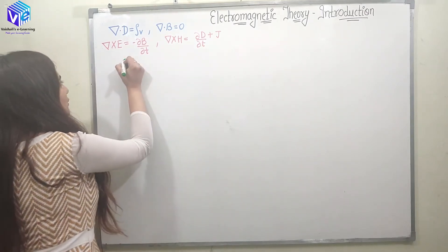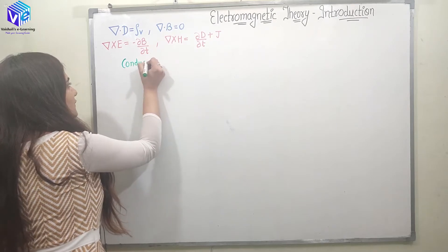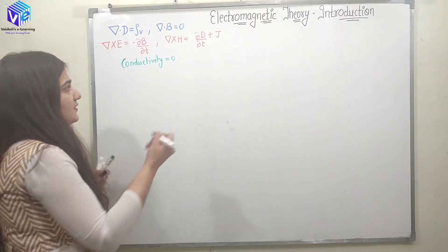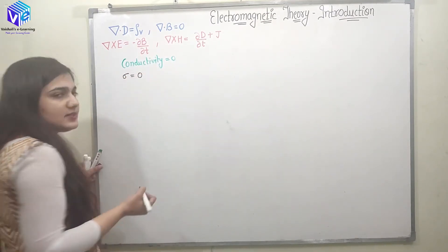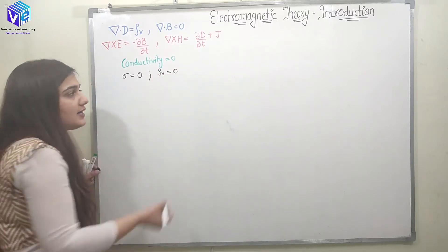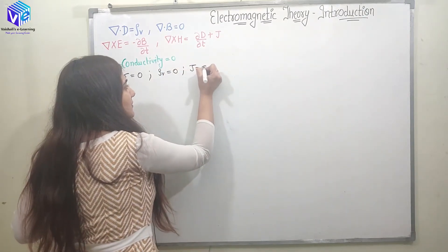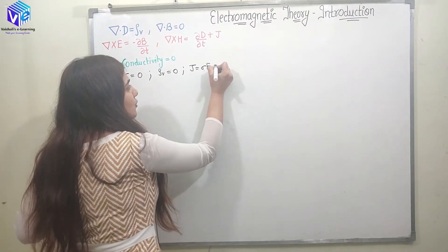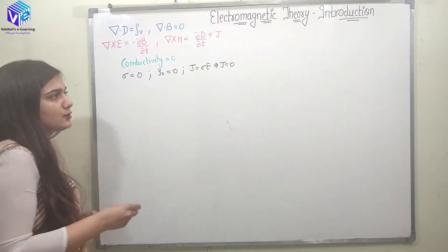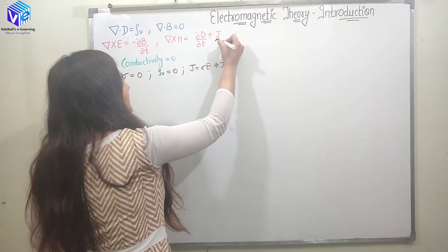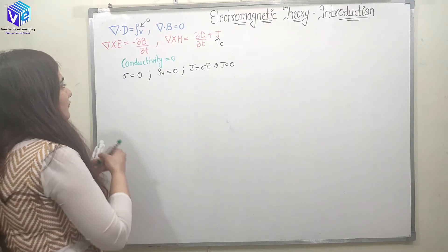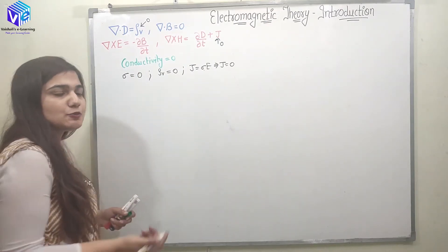Now let's discuss a scenario where the conductivity σ = 0. When σ = 0, we can directly say ρ_v = 0. Also, since J = σE and σ = 0, we get J = 0. So now I can modify these four Maxwell's equations by putting J = 0 and ρ_v = 0. Let's discuss all four Maxwell's equations for the case of conductivity equal to zero.